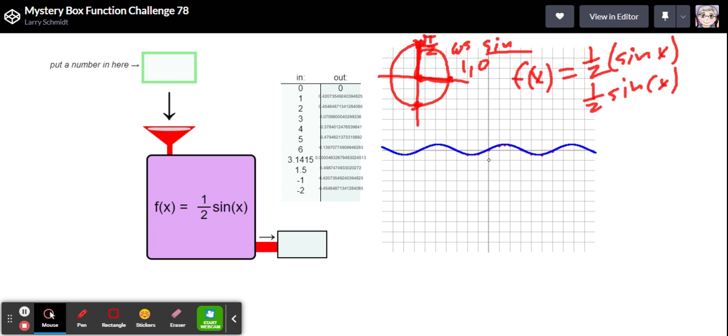If you put a big number there, like three or four or ten, they'd get really high. So that is one half times the sine of x. How did that go for you? Were you able to see that this was a trig function? Let me know. Thanks, everybody.